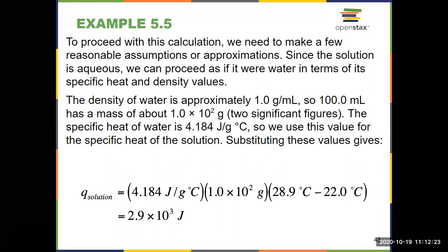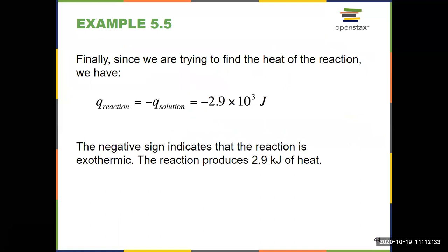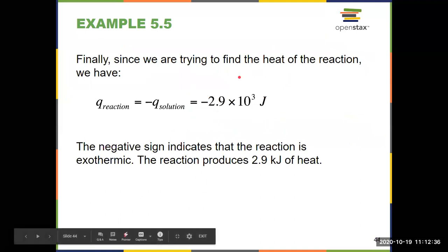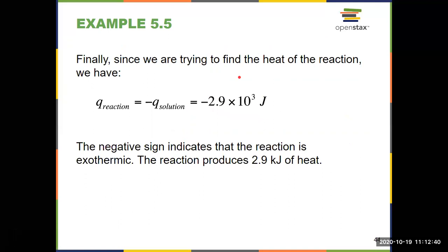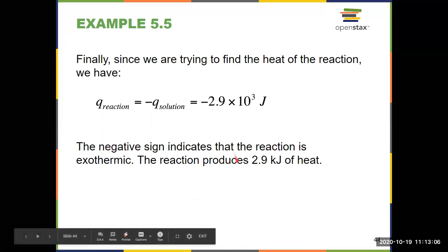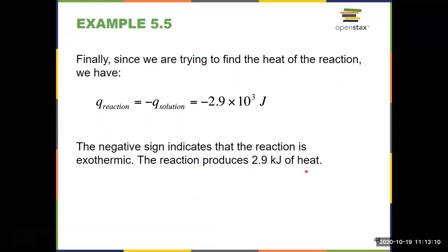Remember, that's the heat of the solution. We were asked for Q_reaction. Q_reaction equals negative Q_solution, so the final answer is negative 2.9 times 10³ joules. If you have a negative heat for a reaction, that means the reaction is exothermic — which a neutralization reaction is. This was HCl and NaOH, an acid and a base coming together, a neutralization reaction from Chapter 4 — those are exothermic. It produces 2.9 kilojoules of heat. If you have a positive Q, that means it's endothermic.